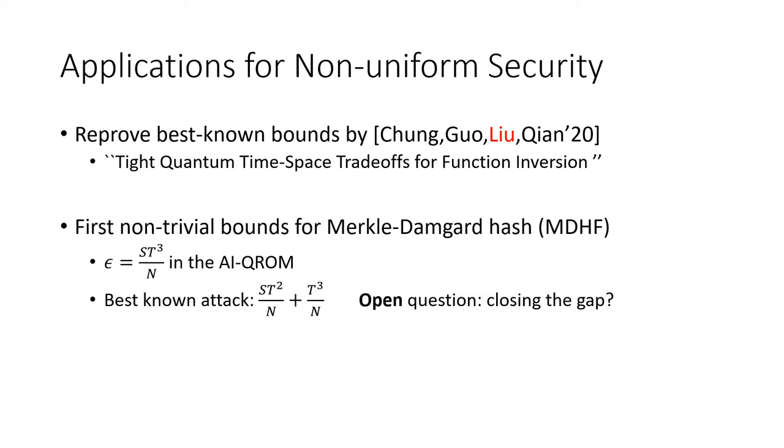Second, we show the first non-trivial bound for the non-uniform security of the famous Merkle-Damgard hash functions. We show its st security in the AIQROM is st cubed over n. The best-known attack achieves st squared plus t cubed over n. We believe further closing the gap is an intriguing question.